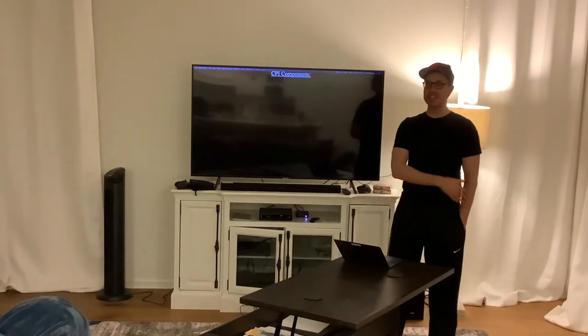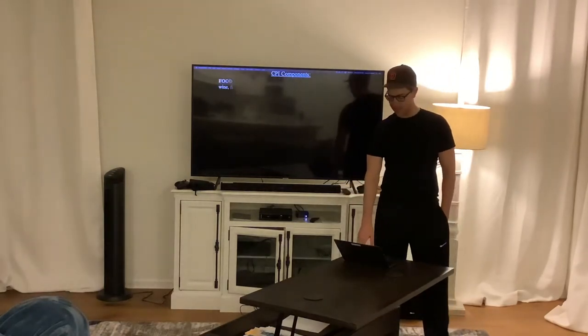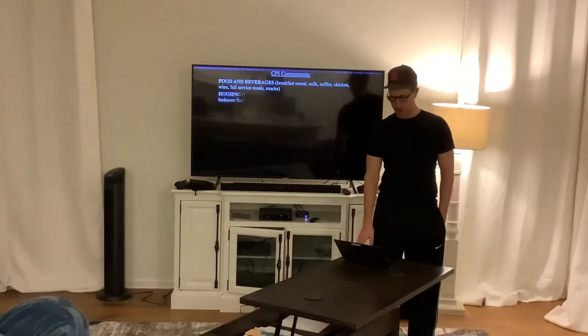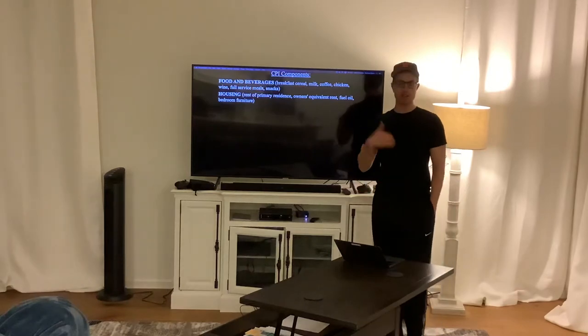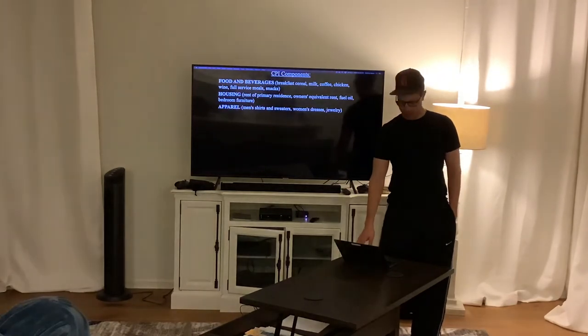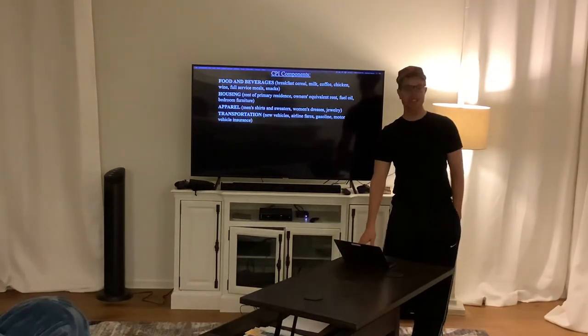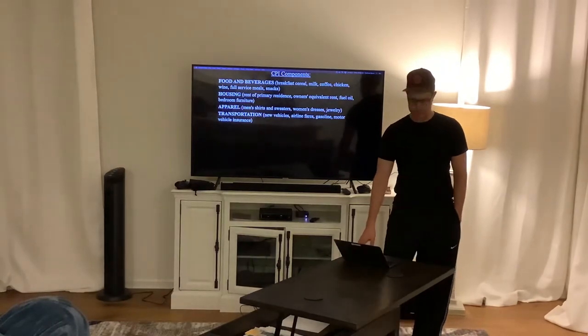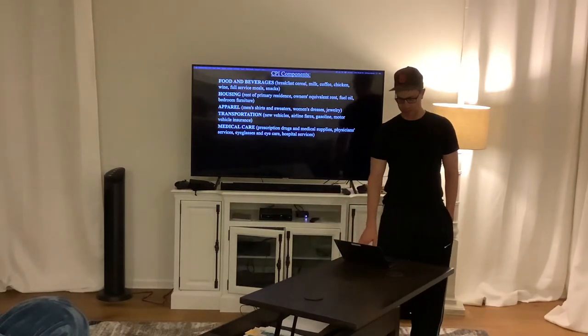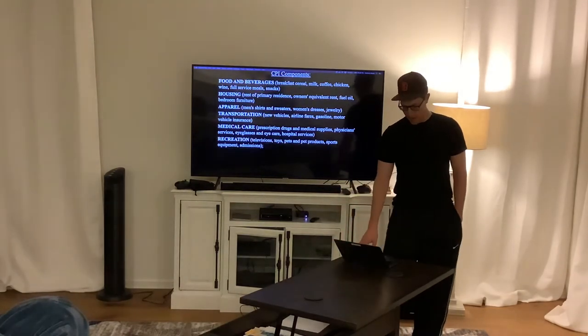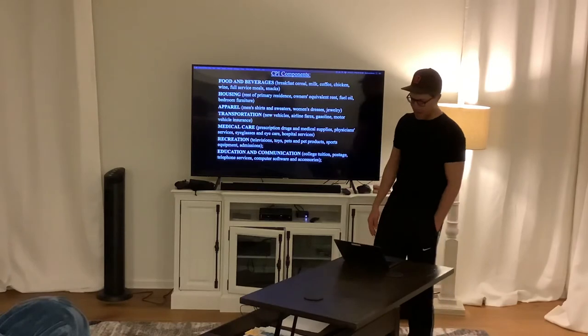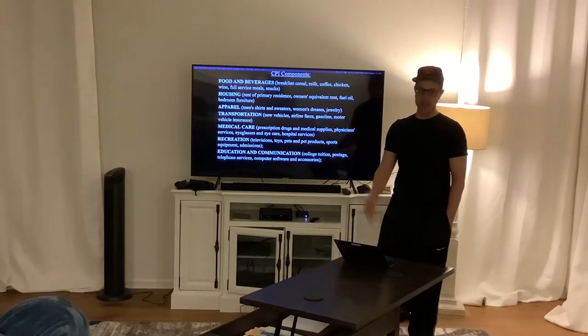Included in those 200 different goods is a lot of stuff. You can take a look at this list in the slides, but it could be food and beverages like cereal, milk, coffee. It could be things in your house like the rent you pay or furniture you go out and buy. Apparel - the clothes you buy. Transportation like vehicles, gas, airplane tickets. Medical care like prescription drugs, physician services, getting your eyes checked. Recreation like a new TV, toy, pet product, or sports equipment.